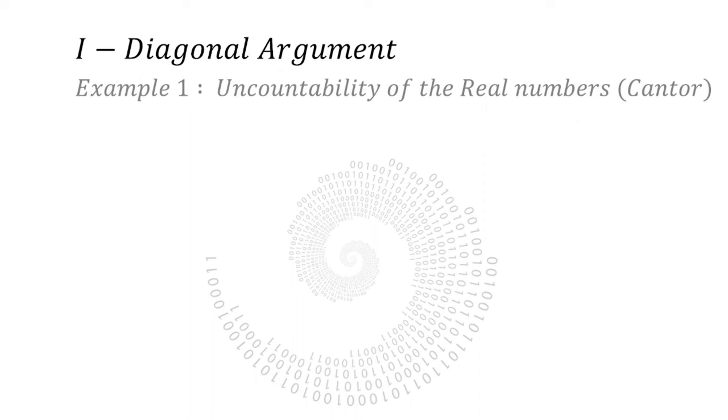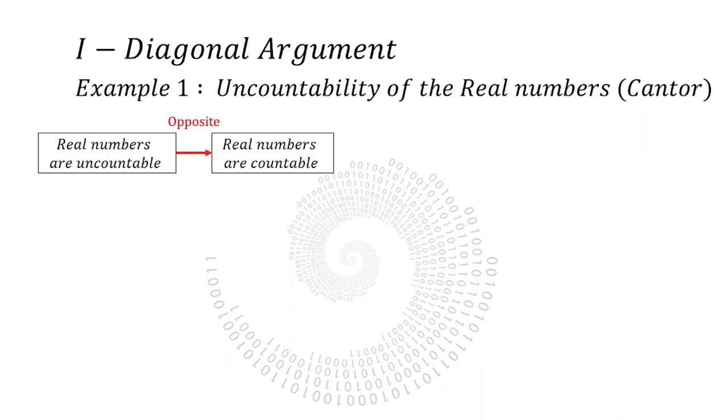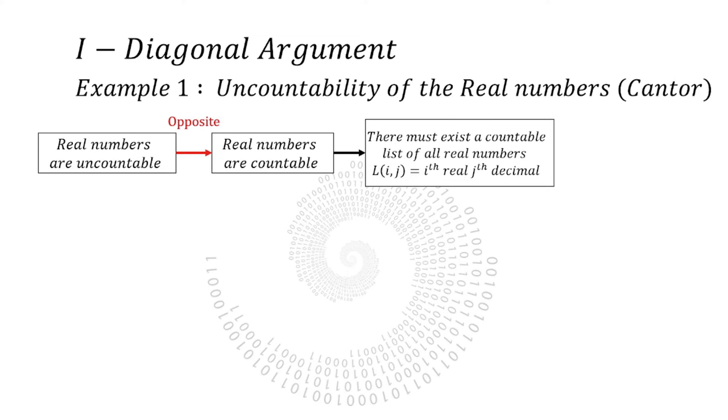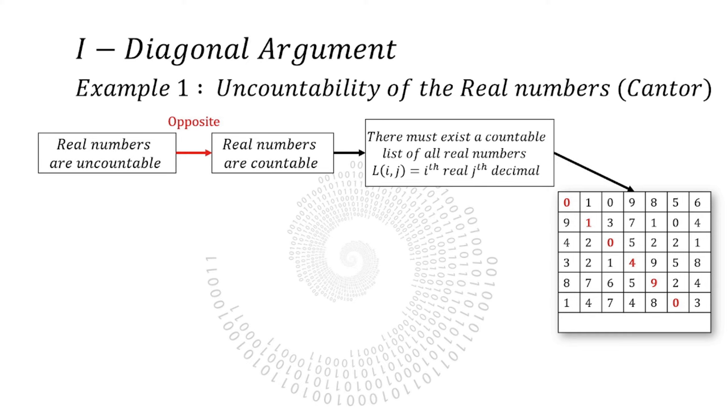We want to prove with diagonal arguments that real numbers are uncountable, which means that the set of real numbers has no bijection with the set of natural numbers. So first, we proceed by contradiction. Let's suppose it is the case, real numbers are countable. Then there must exist a list of all real numbers indexed by I, and each decimal is indexed by J. The order of real numbers doesn't matter here. We can represent this list in a table where rows are real numbers and columns are decimals.